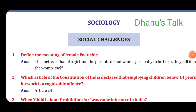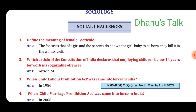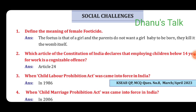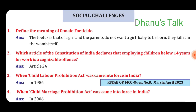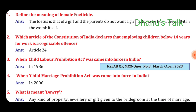From Sociology, Chapter: Social Challenges. First question: Define the meaning of female feticide. Answer: The fetus is that of a girl and the parents do not want a girl baby to be born, so they kill it in the womb itself. Second: Which article of the Constitution of India declares that employing children below 14 years for work is a cognizable offense? Answer: Article 24. Question No. 3: When did the Child Labour Prohibition Act come into force in India? Answer: 1986.